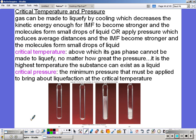So the critical temperature is above which a gas phase cannot be made to liquefy. No matter how great the pressure, it's the highest temperature a substance can exist as a liquid. Critical pressure is the minimum pressure that must be applied to bring about liquefaction at the critical temperature.